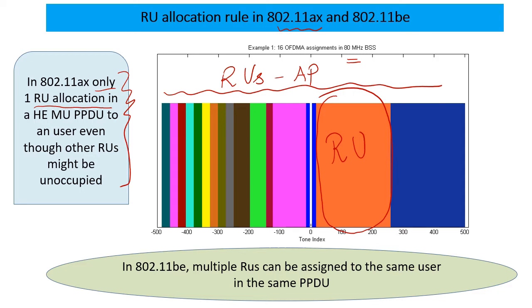What's the big deal about it? In my earlier videos, I've talked about the challenges for the AP with respect to scheduling. One of the challenges is that the AP has to decide a particular RU split based on some heuristics, and this might not exactly match the requirement in hand with this constraint of just one RU per user.